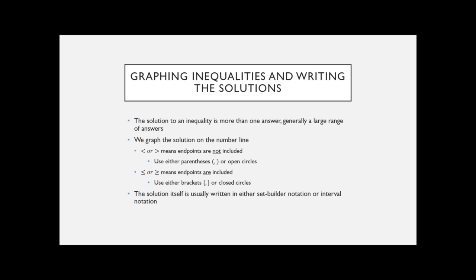Next is learning how to graph these and write the solutions — we'll wait on the solving. When you have an inequality saying something is greater than or less than, you could have lots of answers. If something is greater than 2, there are infinitely many numbers that qualify, so we need to write solutions in a way that indicates that without listing every possible number. We generally graph on a horizontal number line since we have one variable.